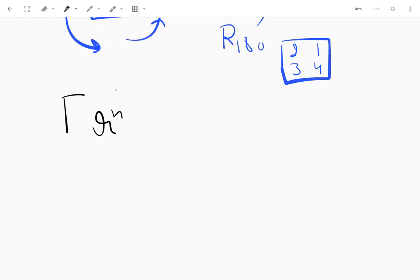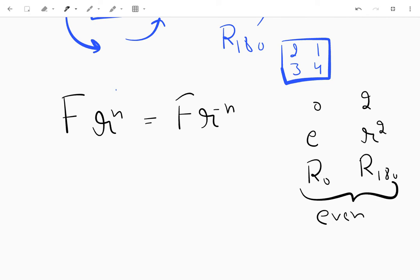So we can conclude that F r^n equals F r^(-n), where n can either be 0 or 2. That means we can either have e or r squared. This is the case when we have even number of edges of a polygon, and if we only have odd, then just r_0.